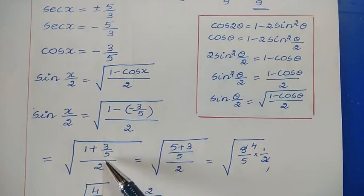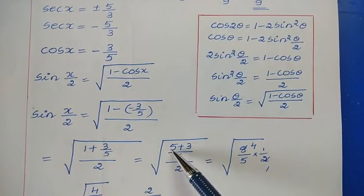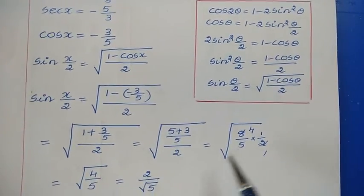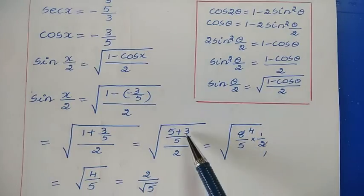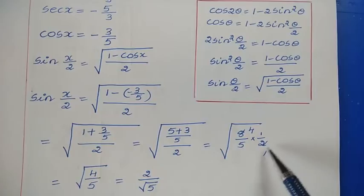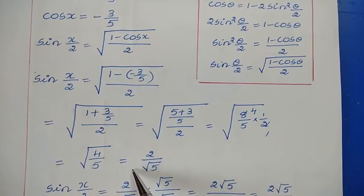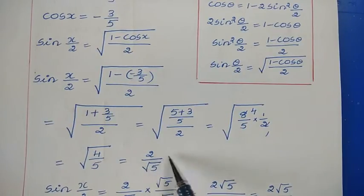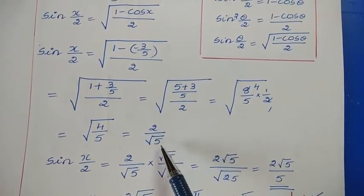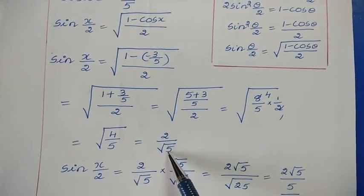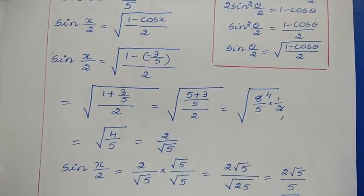After cross multiplication, 2 becomes half, so we have √(8/5 × 1/2) = √(4/5). That is √4/√5 = 2/√5. Since we have √5 in the denominator, we need to rationalize.